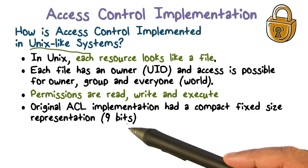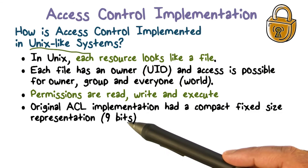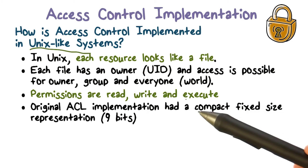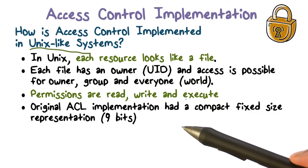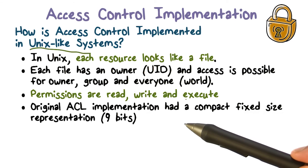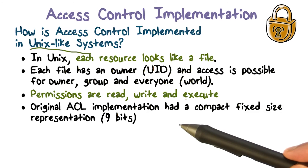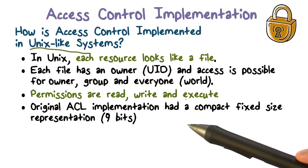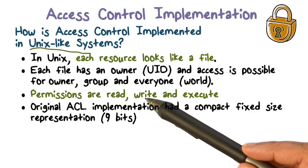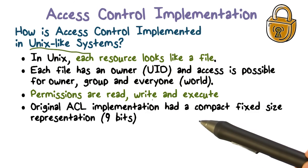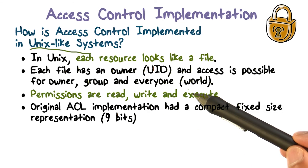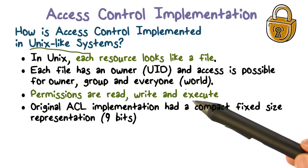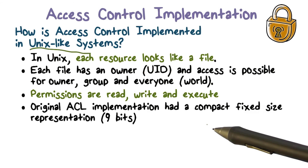It wasn't implemented as a linked list — it was implemented as a bitmask. Specifically, nine bits were needed. Those nine bits encode read, write, and execute for the owner, then for the group, then for the world. If the bit is on for a given permission, the user has that right — for example, the user can read the file. This compact fixed-size representation was likely chosen because saving memory was important in those days. So ACLs were implemented using essentially nine bits, with a few extra bits as well.